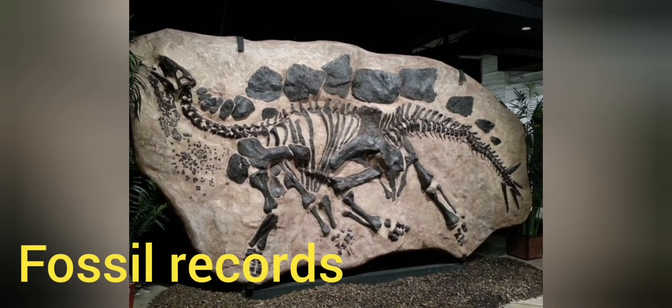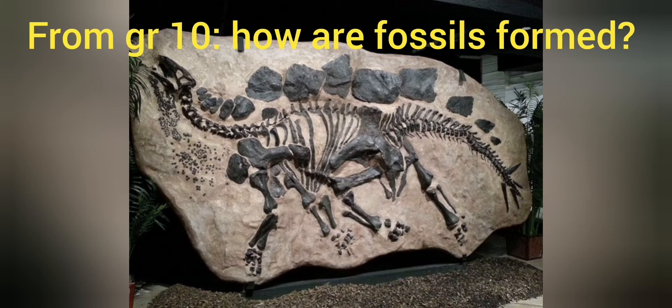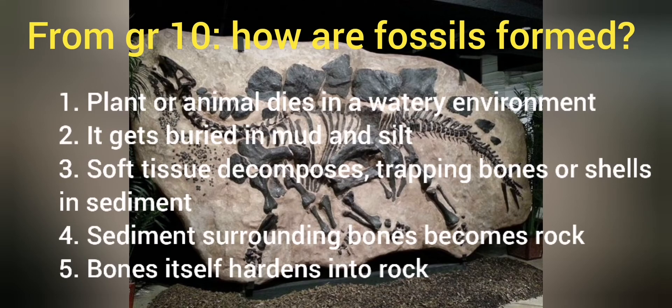The fossil record actually serves as evidence for evolution. In grade 10 we already learned about fossils — can you remember how fossils are formed? They're formed in many ways, but the most common is when a plant or animal dies in a watery environment and gets buried in mud or silt. The soft tissues quickly decompose, but the hard bones or shells stay behind, and over time sediment builds up on top and hardens into rock.